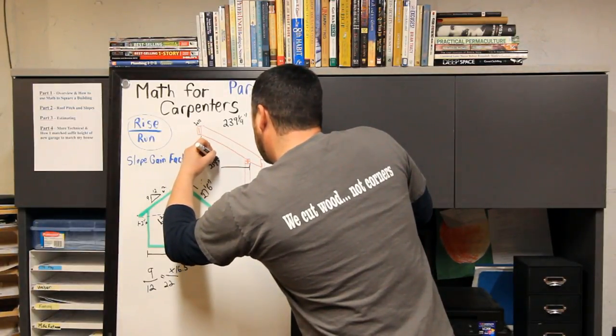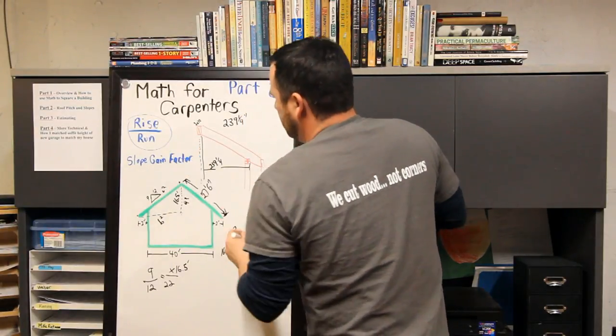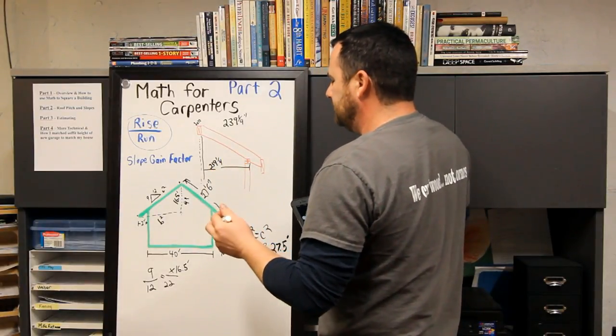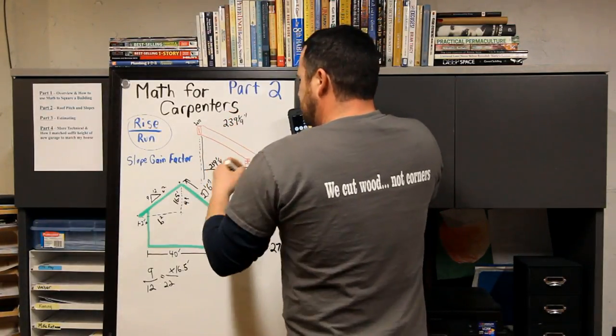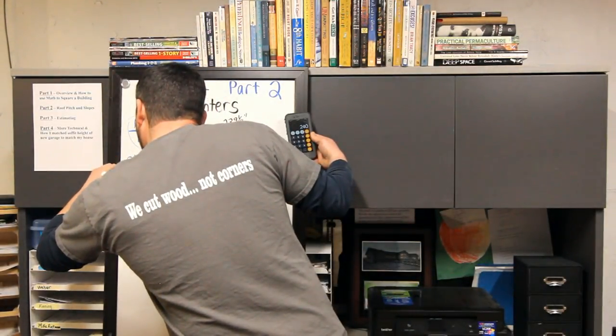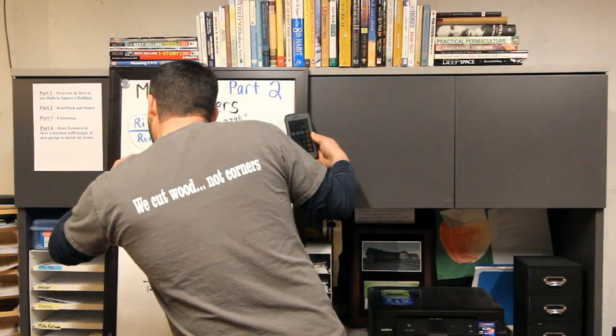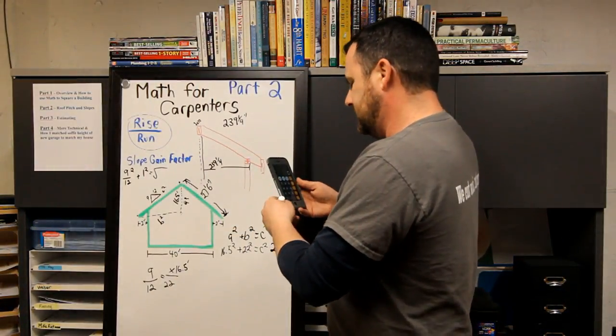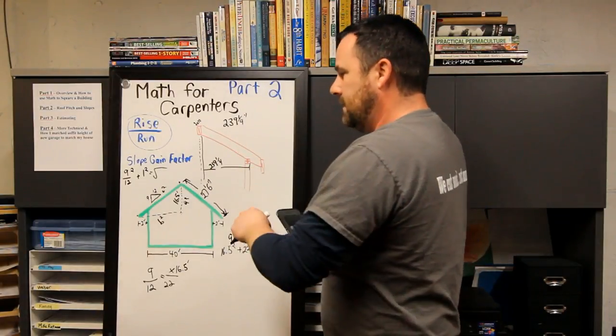Your slope gain factor has to do with your rise over run. So let's figure out your slope gain factor: you have 9 over 12 squared plus 1 squared, and then you square root that. I'm not going to get into the details because I don't really remember, I just know that that's the formula for a regular rafter. If you're doing a hip rafter it's different, but that's another day.